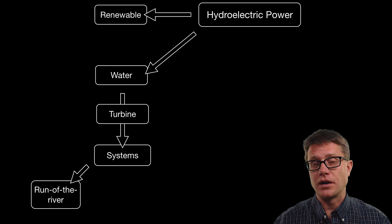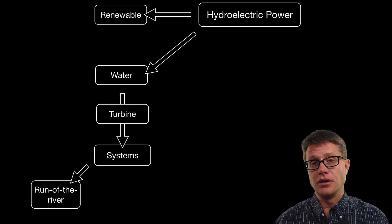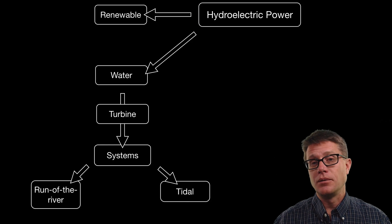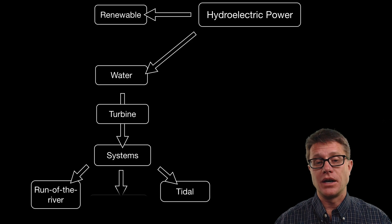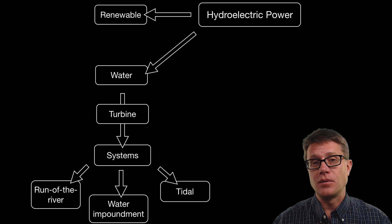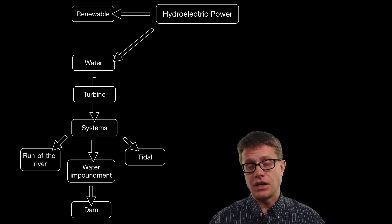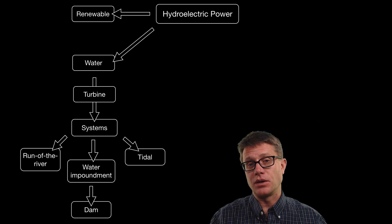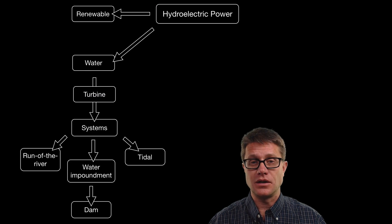The major types we will talk about are the run of the river systems — instead of having a dam they simply have a turbine on the river itself, so as the water flows they can generate electricity. We have tidal systems and we are starting to bring on wave systems, so as the water moves back and forth we can generate energy. And then finally we have the most famous type, the water impoundment system or the dam, where we essentially take a river, build a wall on it, and trap the water behind it. We can then regulate when we let the water out and through the turbines to generate electricity.